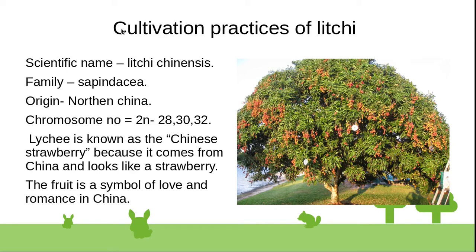Cultivation practice of lychee. The scientific name of lychee is Litchi chinensis, family Sapindaceae, origin from northern China. The chromosome number 2n equals 28, 30, or 32. Lychee is also known as Chinese strawberry because it comes from China and looks like a strawberry. It is a fruit symbol of love and romance in China.